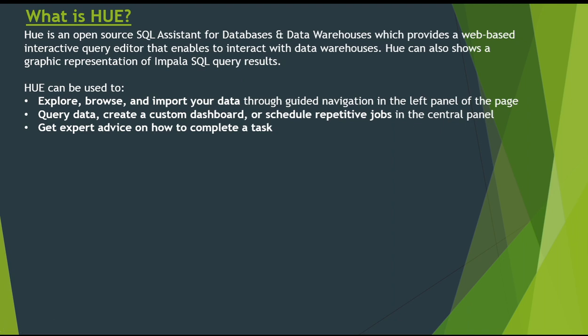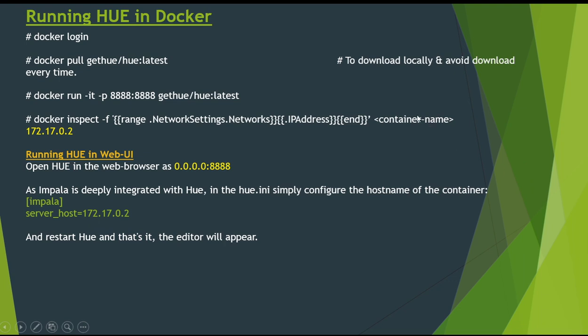Hue can be used to explore, browse, and import our data through guided navigation in the left panel of the page — I will show you the web UI of Hue shortly. We can query data, create a custom dashboard, or schedule our repetitive jobs using Oozie. We can even get expert advice on how to complete a task; it provides suggestions to write a SQL query which will improve performance and give results much faster.